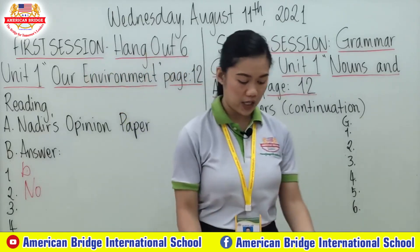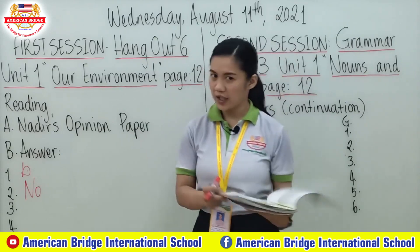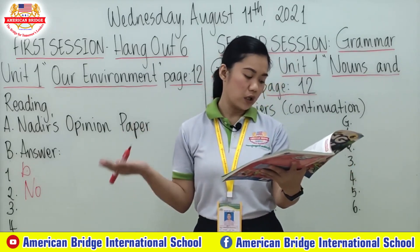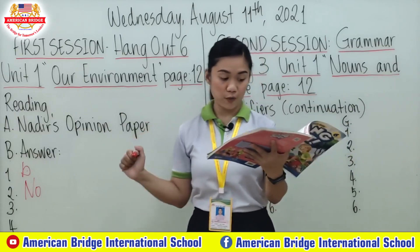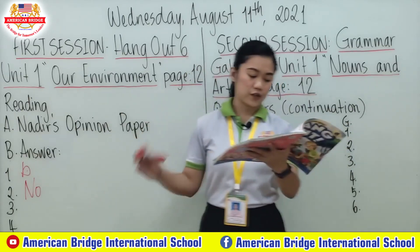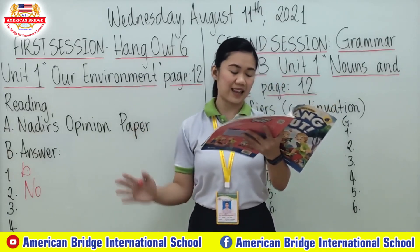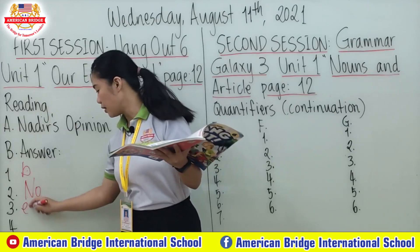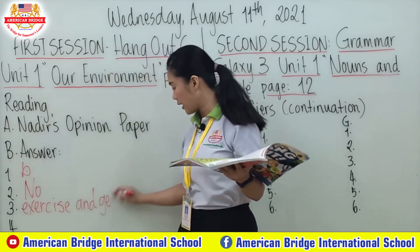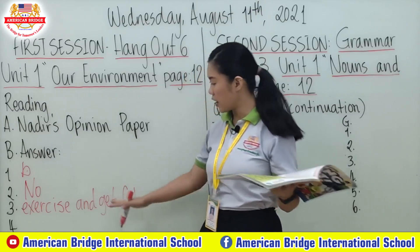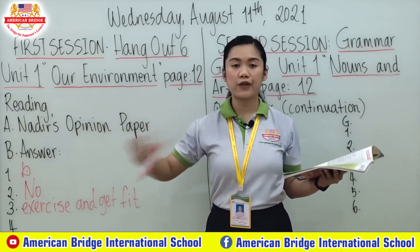Next, number three is: What do people do in green areas? You can share your answer into your group or answer on the whiteboard. So, according to his opinion, people exercise and get fit in green areas. These are the activities people do when they are in green areas.